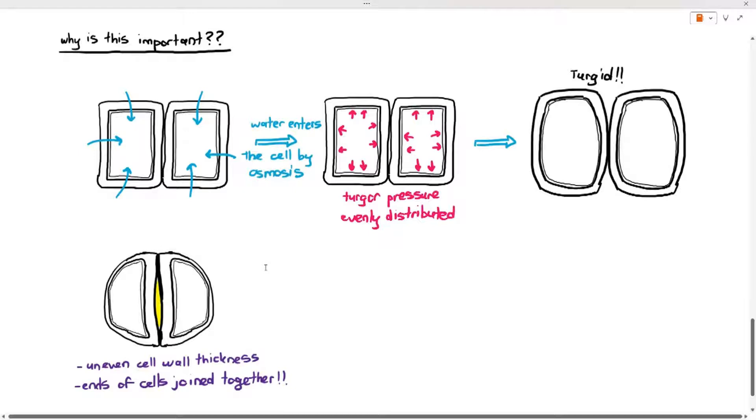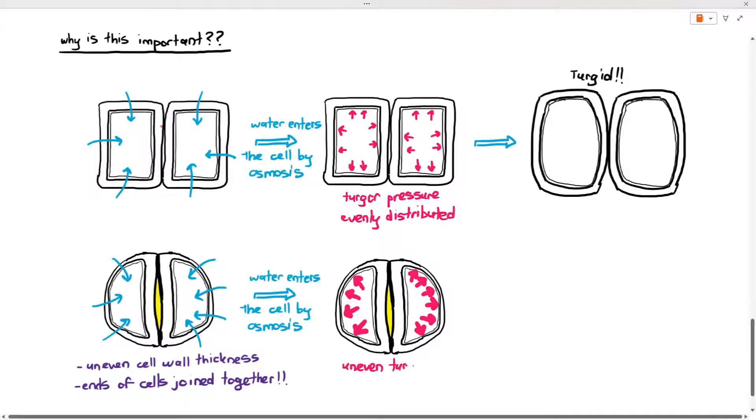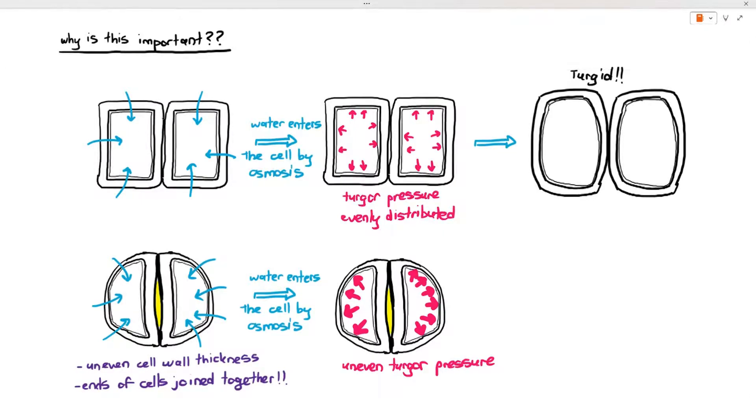All seems good over here but for the guard cells at the bottom, when the water enters the cell by osmosis the turgor pressure towards the sides, that means further away from the pore, as I've represented in the pink arrow, the turgor pressure over there will be uneven. The reason is because the cell wall is quite uneven in their thickness so the thinner side is able to expand more compared to the thicker side.